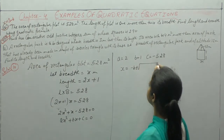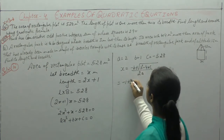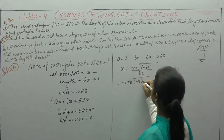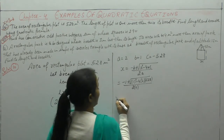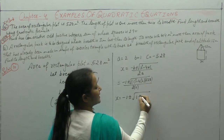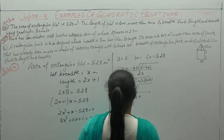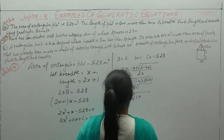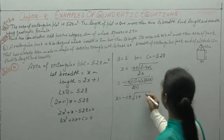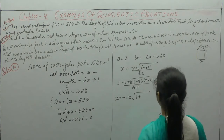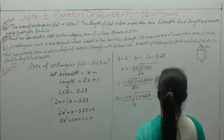x = (−b ± √(b² − 4ac)) / 2a. Substituting: x = (−1 ± √(1 − 4×2×(−528))) / (2×2). So we compute 528 × 8 = 4224, giving us (−1 ± √4225) / 4.